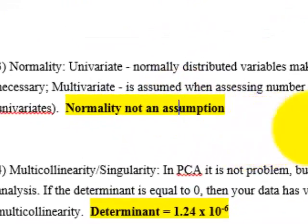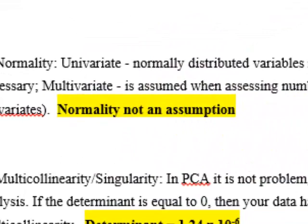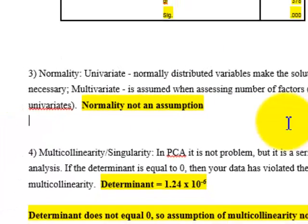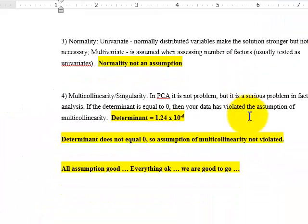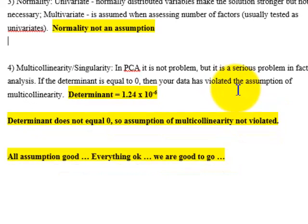What that means is at least two of your items are correlated significantly. So that's basically the minimum amount of correlations you need is just one in order to run a factor analysis. Number three, normality is not an assumption. So we really don't care if these items are normal or not. The last thing is multicollinearity. You don't want two of your items to be exactly the same for every person taking a test. We just check the determinant for that, and all we're looking for is to make sure it does not equal zero and ours doesn't. So therefore, we can assume that our assumptions are all met.